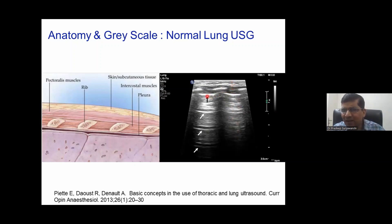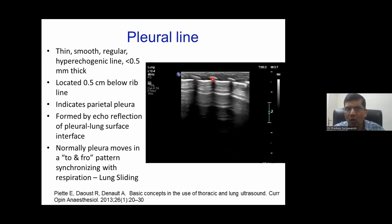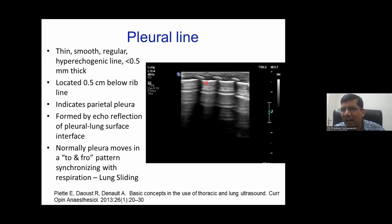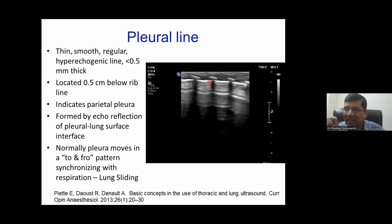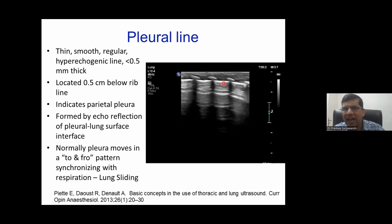The first thing we need to identify in any lung ultrasound is the pleural line. The pleural line is a thin, smooth, regular hyperechoic line located below the ribs. This echogenic line indicates the parietal pleura. Below this pleural line, you can observe sliding — a to-and-fro movement — which is called lung sliding.